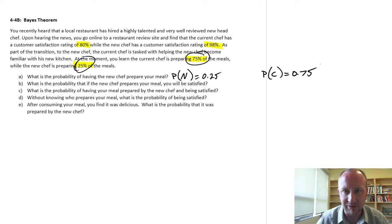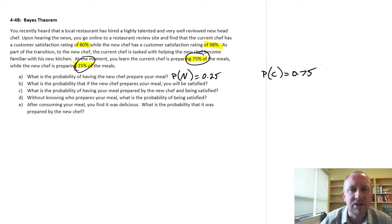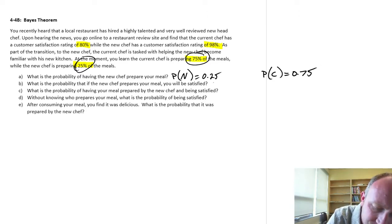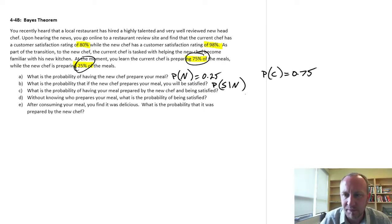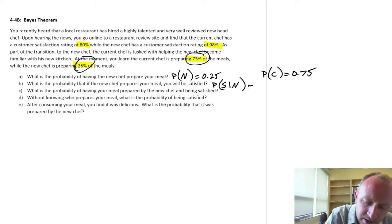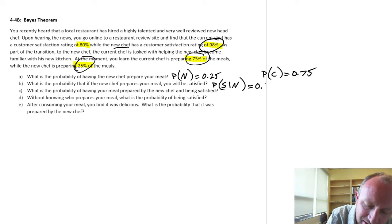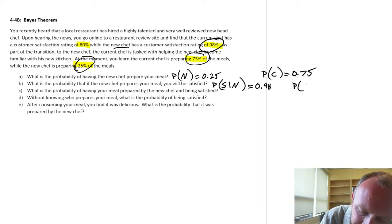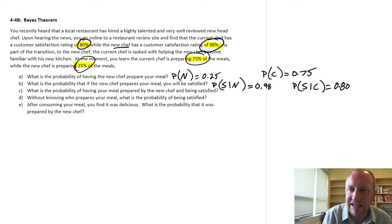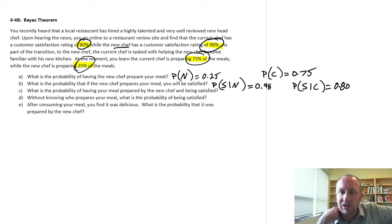We'll calculate all of the probabilities as we go, because they'll become useful towards the end. Part B: what is the probability that if the new chef prepares your meal, you will be satisfied? That's the probability of being satisfied given the new chef prepared the meal. The new chef has a satisfaction rating of 98%, so there's a 98% chance of satisfaction. Compared to the current chef, where there's an 80% chance of satisfaction.